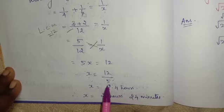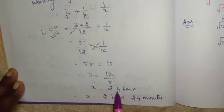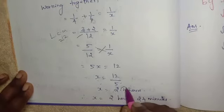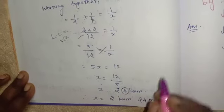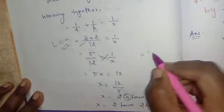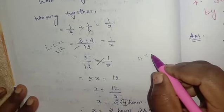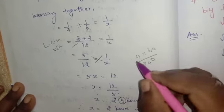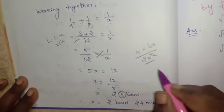12 by 5, 12 divided by 5 equals 2.4 hours. 0.4 multiplied by 60 gives 24 minutes.